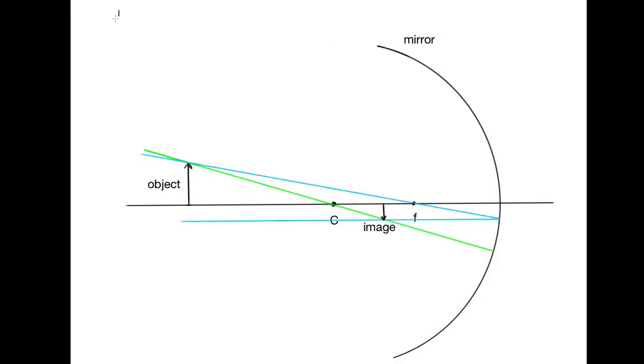We're trying to show the relationship 1 over F is equal to 1 over O plus 1 over I.